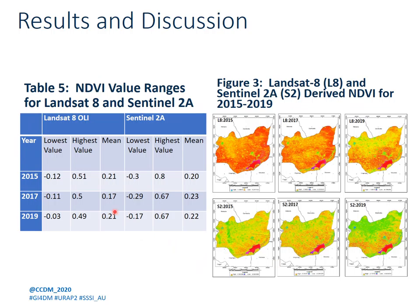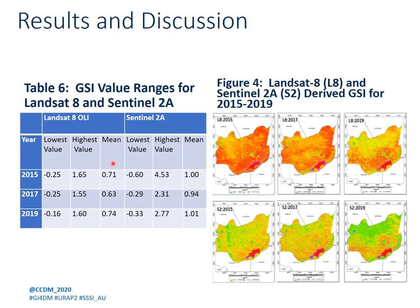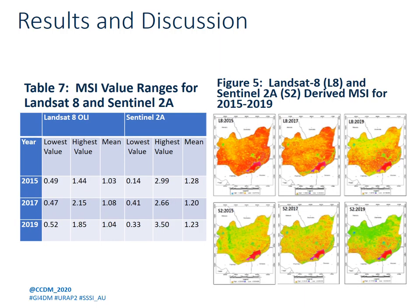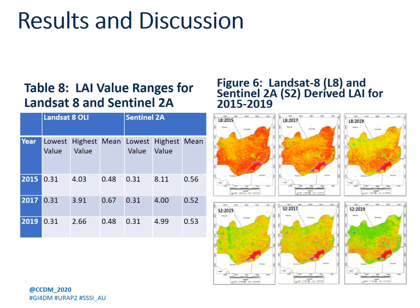The results also show the NDVI values for Landsat-8 and Sentinel-2A over the same period, including plots showing low, high, and mid values between the two sensors. We also have the same statistics for the Green Chlorophyll Index, Moisture Index, and Leaf Area Index. These are the different statistics as they apply to each of the vegetative indices.